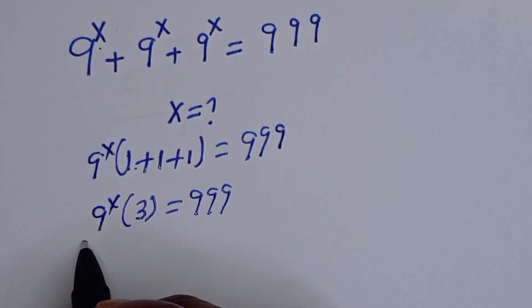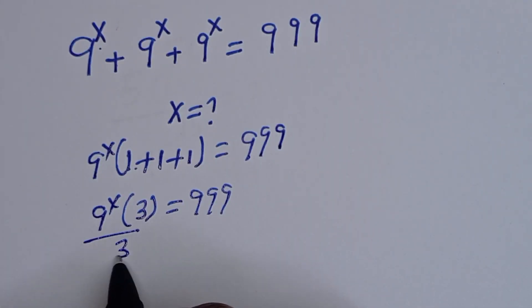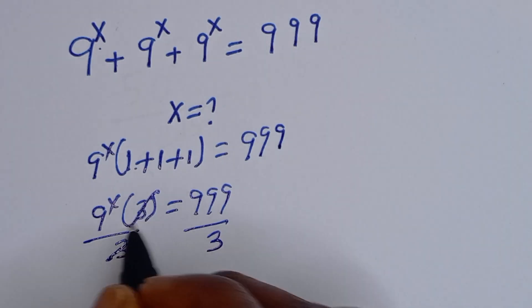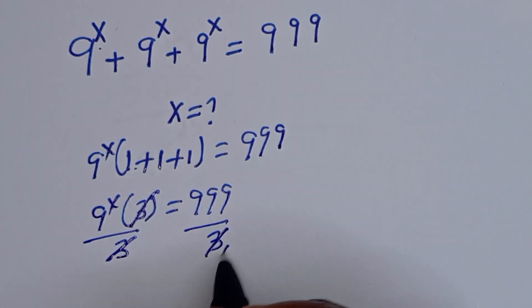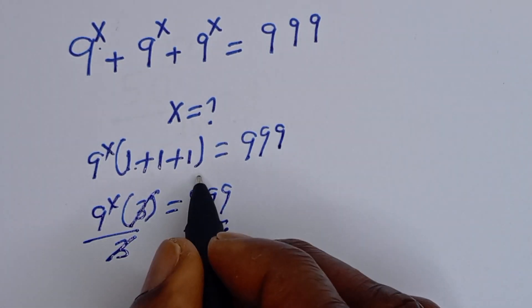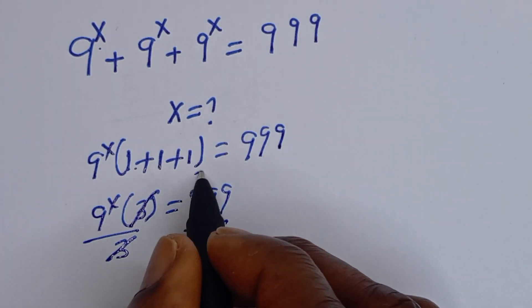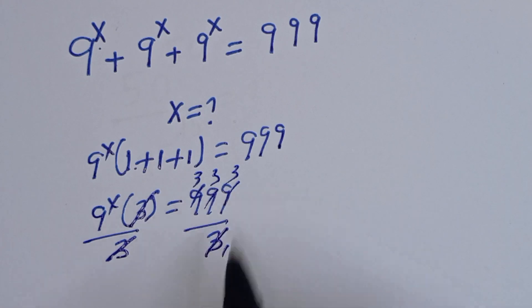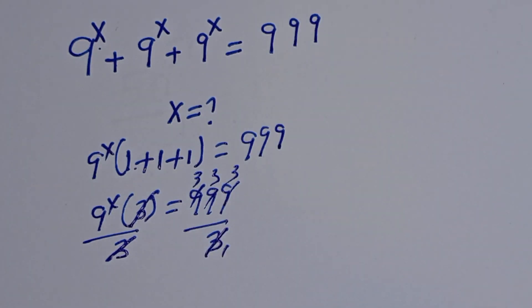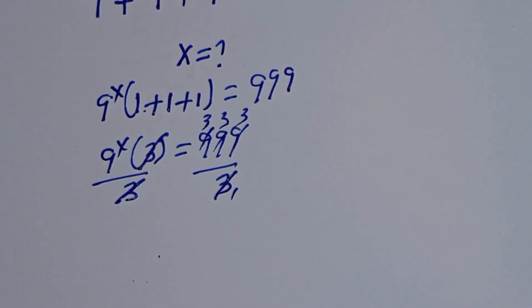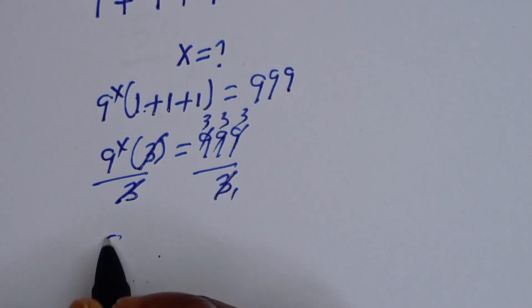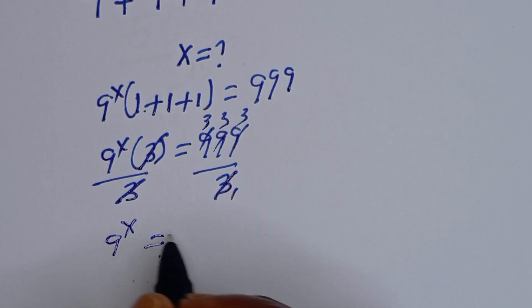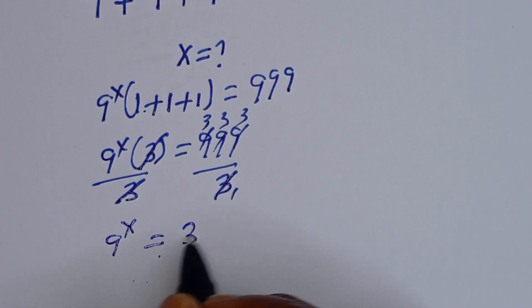Now let's divide both sides by 3. This divided by 3 and this divided by 3 — the 3s cancel. So 9 to the power of S is equal to 333.